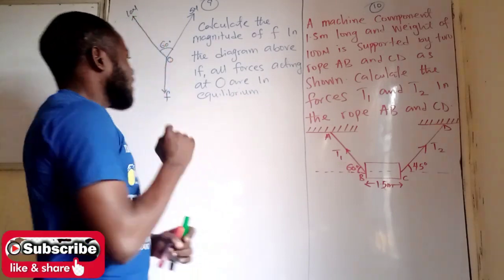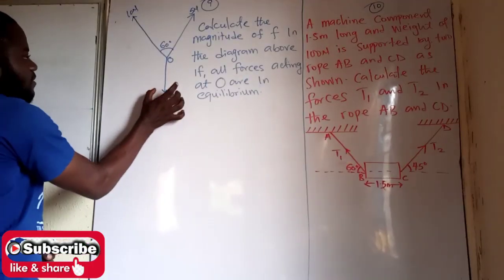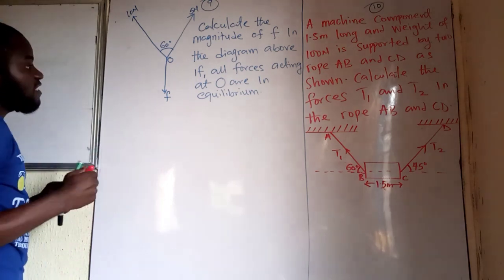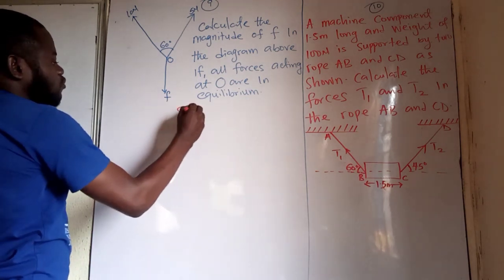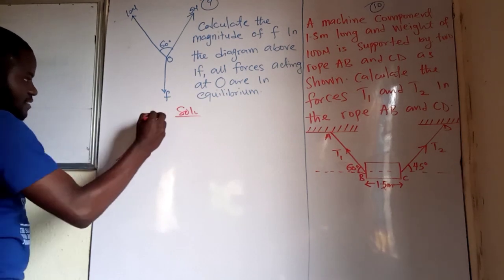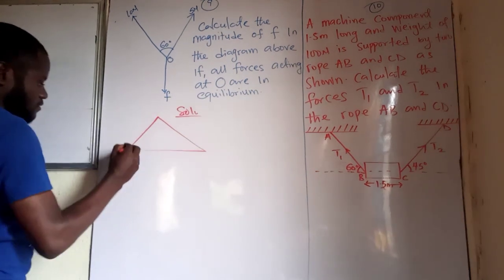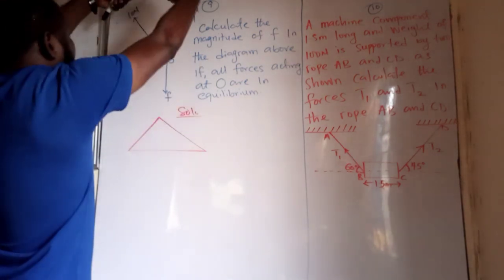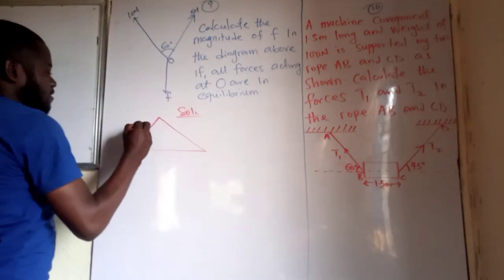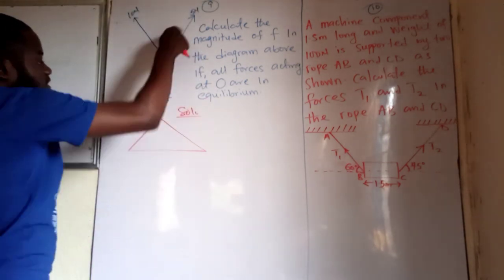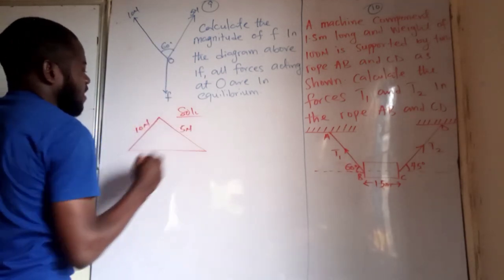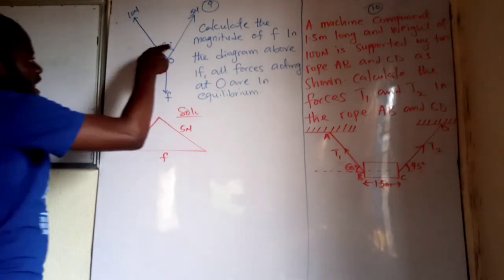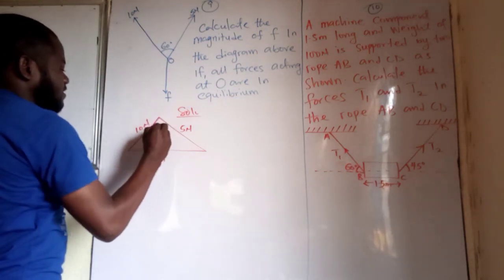We make this particular side the third side of the triangle. If I turn it like this, I will have here to be 10 newtons, here to be 5 newtons, and here is going to be our F. The angle here is 60 degrees.